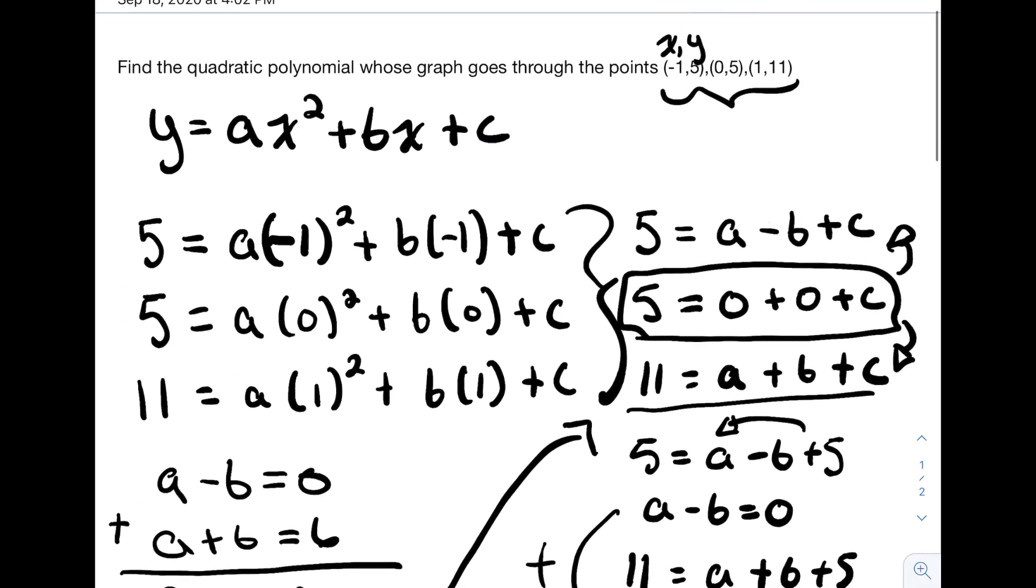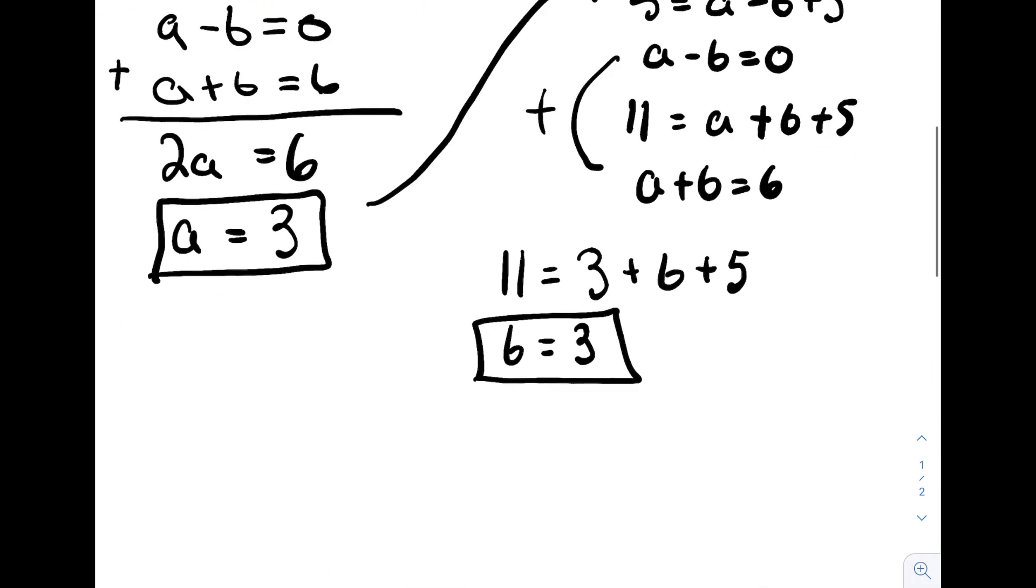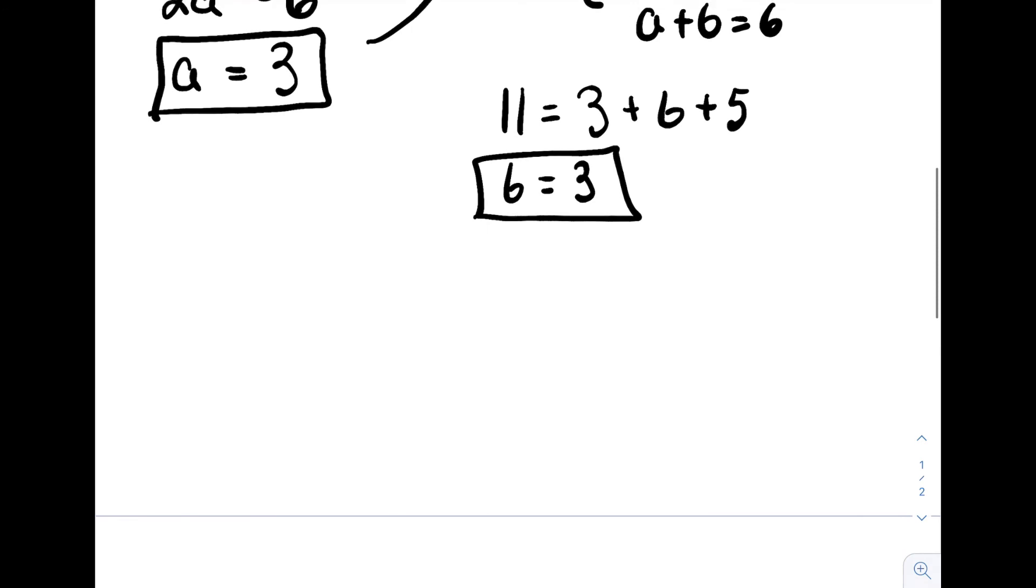And the question asks us to find the quadratic polynomial. So to write this in our final form, f of x is equal to 3x² plus 3x plus 5. And that's your answer.